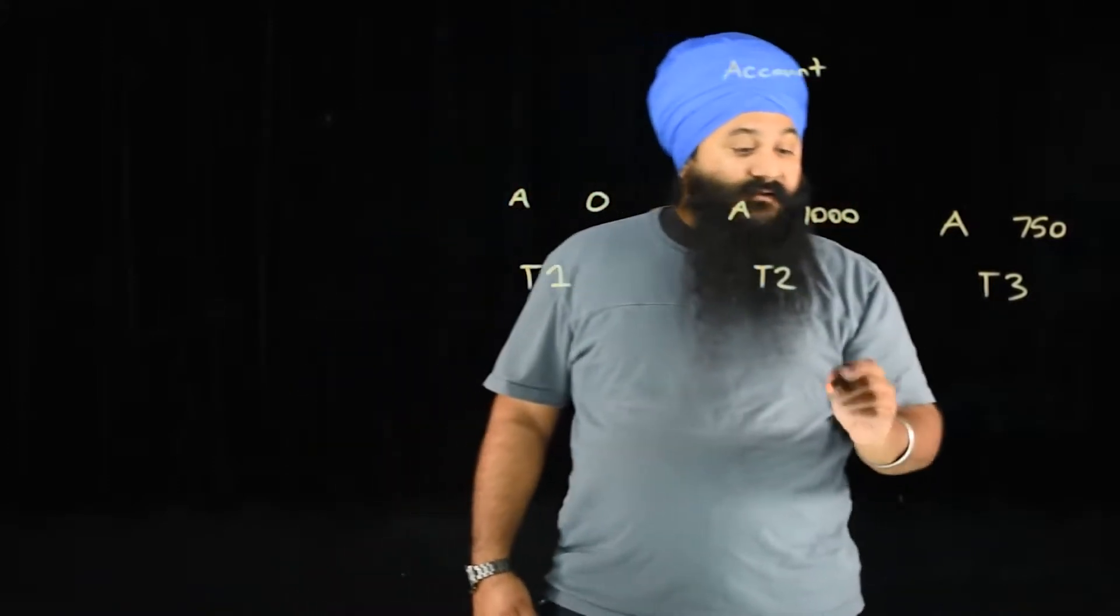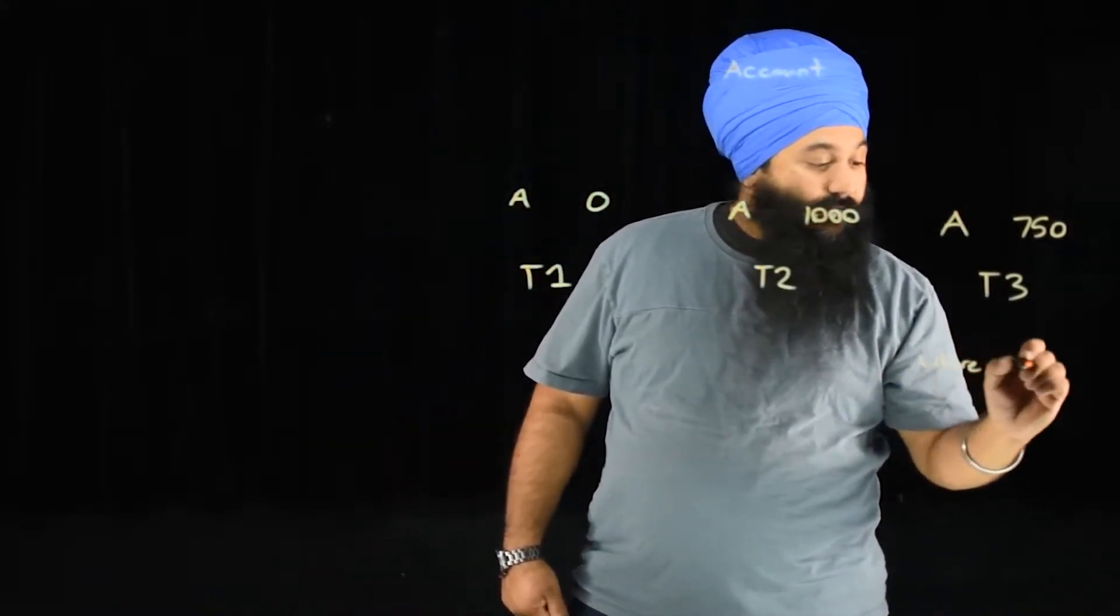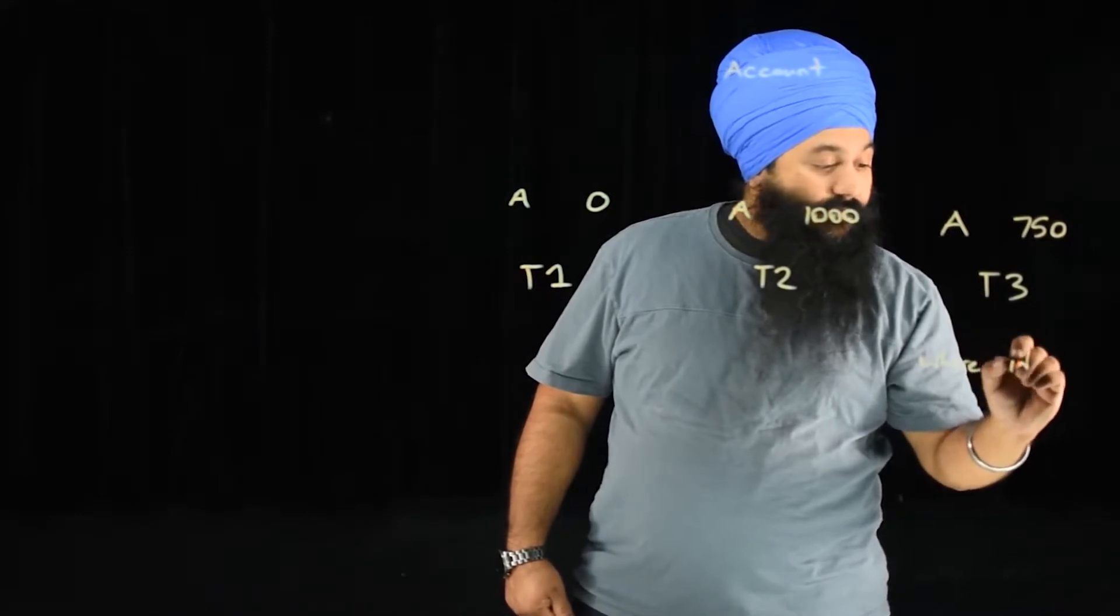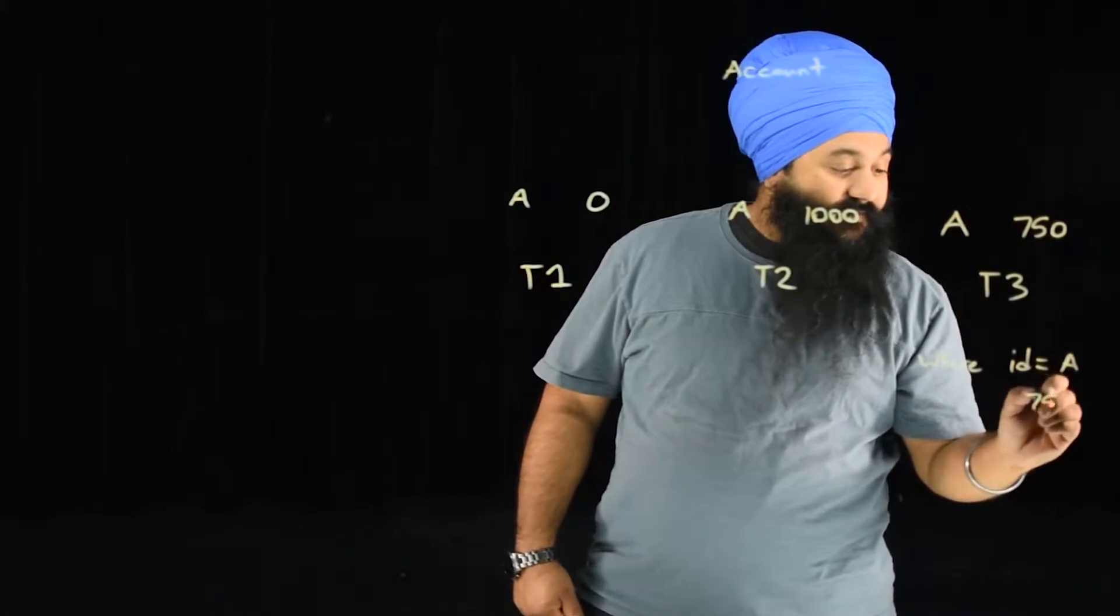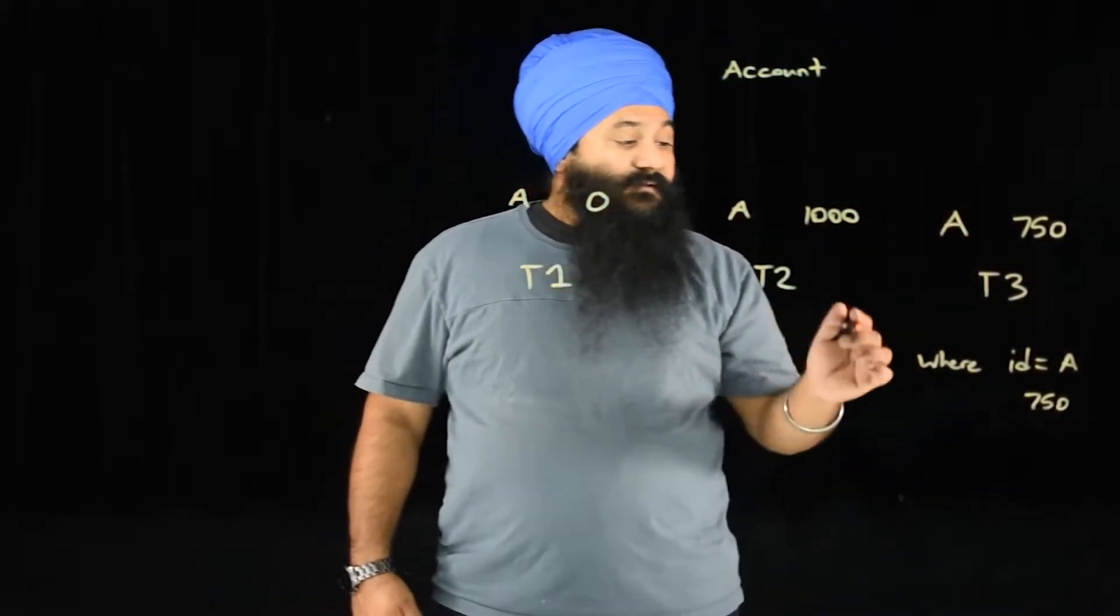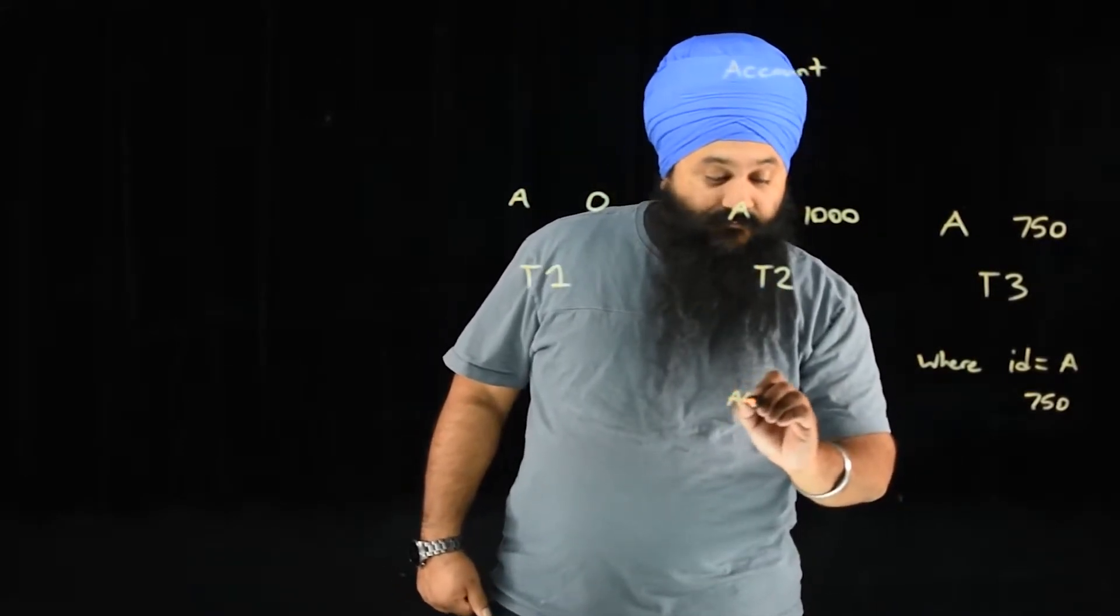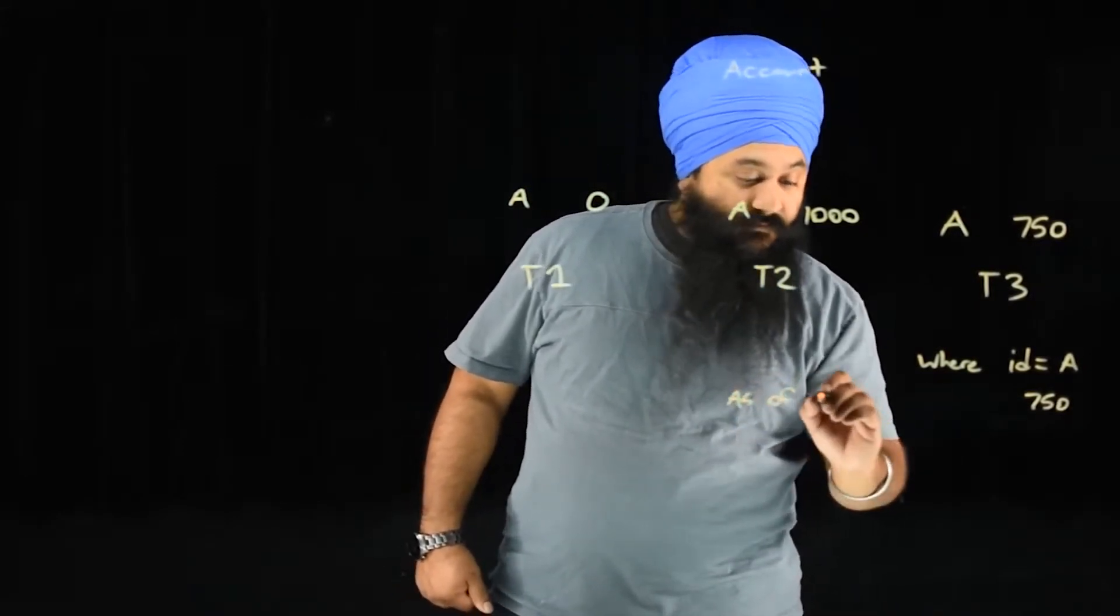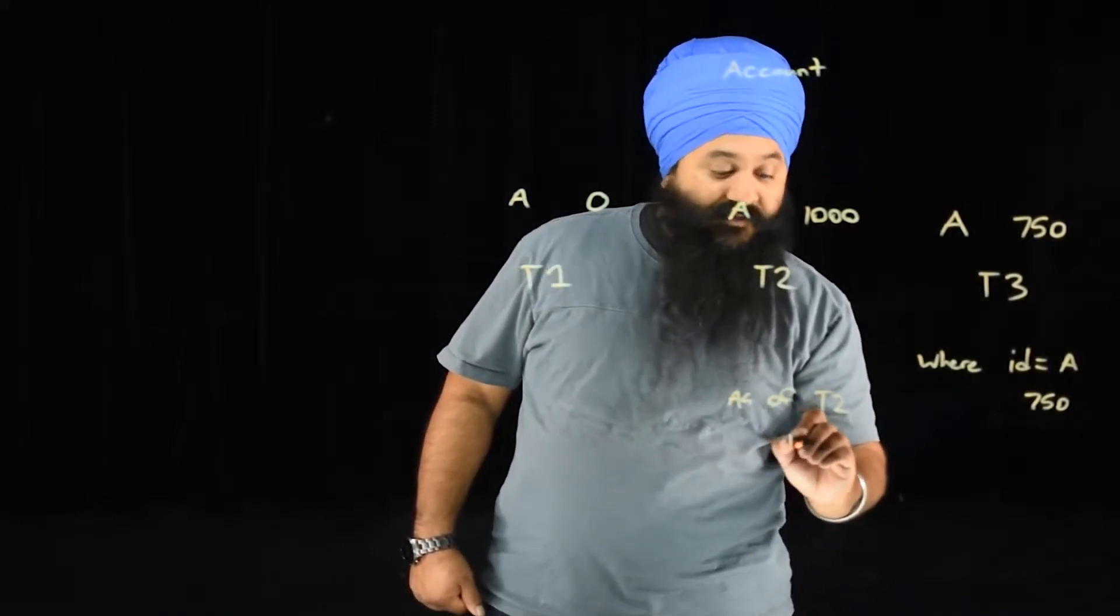So if we did a select from account where ID equals A, we would get the value of $750. That's our current account balance.